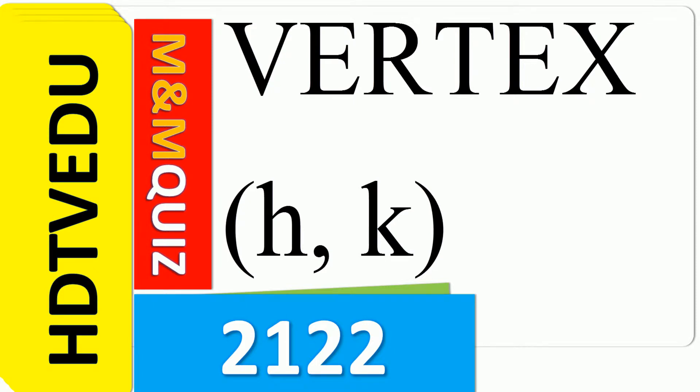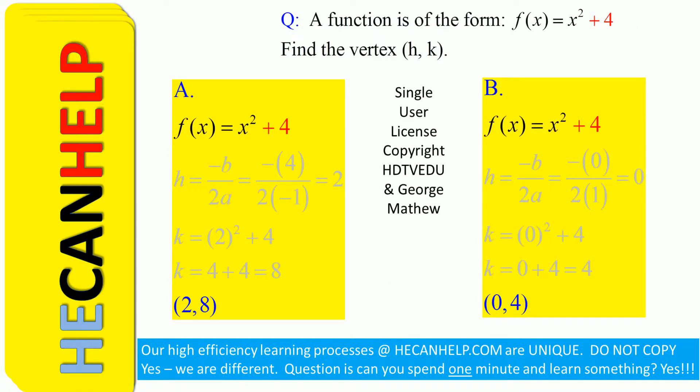Welcome! A function is of the form f(x) = x² + 4. The relationship between y and x is given by y = x² + 4. Find the vertex (h,k). Is it A: (2,8) or is it B: (0,4)?